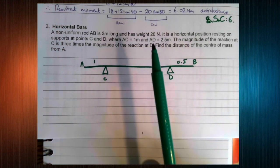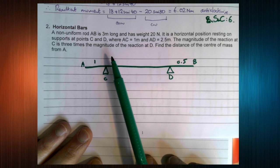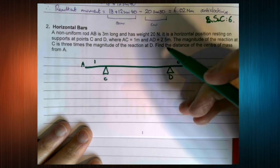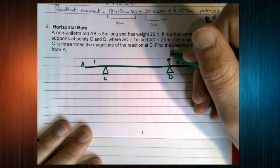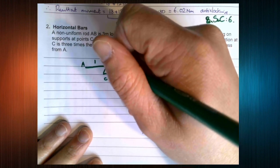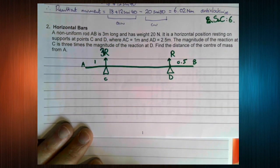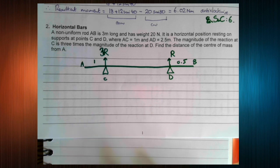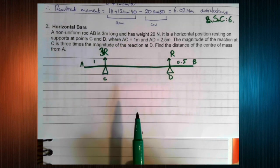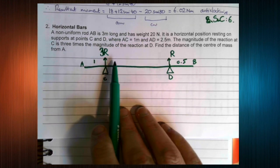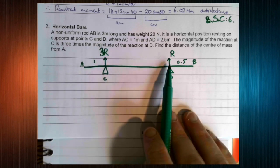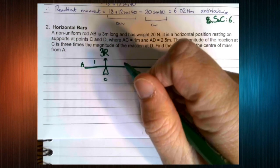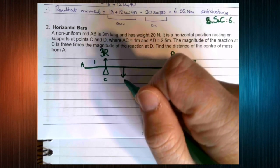The magnitude of the reaction at C is three times the magnitude of the reaction at D. So if we call this reaction here R, that means that this reaction is 3R. There aren't any other forces. This one is bigger than this one, which means the center of mass has to be closer to C than D. Let's put the center of mass here.